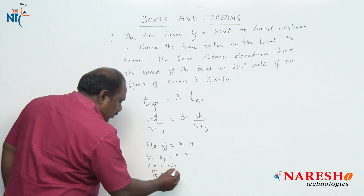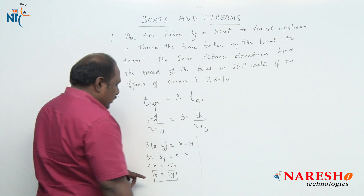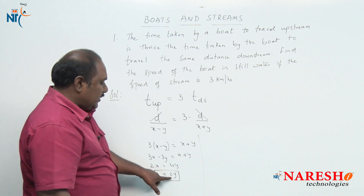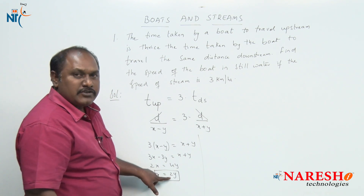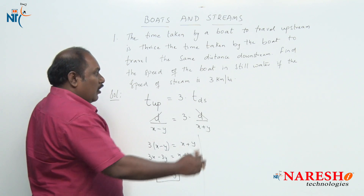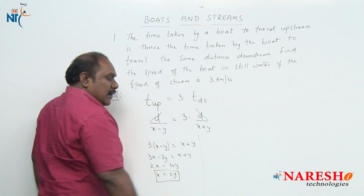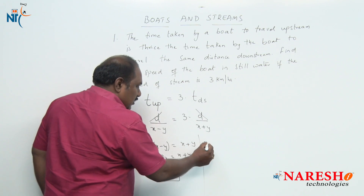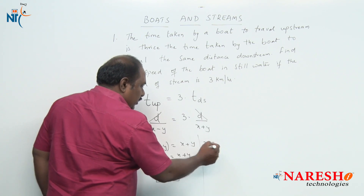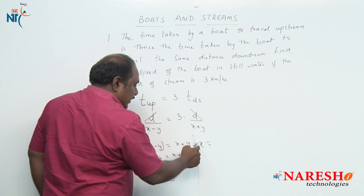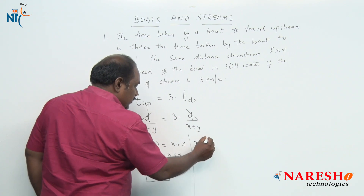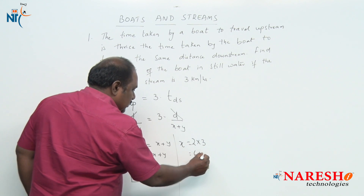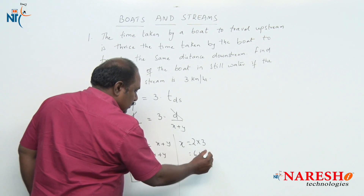This gives 2x equal to 4y, or x equal to 2y. We know that x is the speed of the boat in still water and y is the speed of the stream. We are given the speed of the stream as 3 kilometers per hour. So the speed of the boat in still water is x, which equals 2 into 3, giving 6 kilometers per hour.